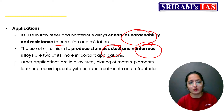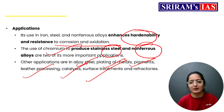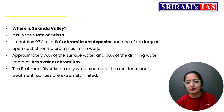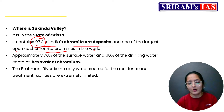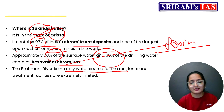In terms of applications: when chromium is added to iron, steel, and alloys, it makes them harder and more resistant to rust, enhancing hardenability and resistance to corrosion and oxidation. It is used in producing stainless steel, non-ferrous alloys, alloy steel, metal plating, pigments, leather processing, as a catalyst, and in surface treatments. It is valuable across construction, manufacturing, automotive, and chemical production. Regarding Sukinda Valley: it contains 97% of India's chromite ore deposits and has the largest open-cast chromite ore mines in the world. Approximately 70% of surface water and 60% of drinking water there contains hexavalent chromium, which is toxic. The valley is in Odisha and the Brahmani River is the sole water source for residents, with extremely limited treatment facilities.